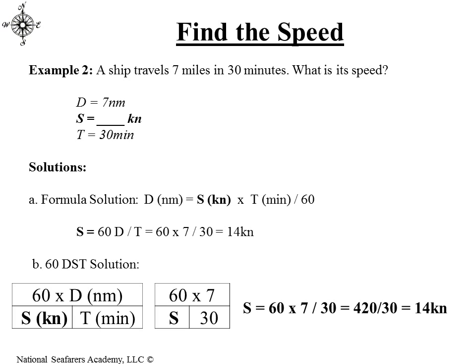The second type of problem: finding the speed. A ship travels 7 miles in 30 minutes — what is the speed? We're given distance of 7 nautical miles and time of 30 minutes. Using the formula: speed equals 60 times distance divided by time, so 60 times 7 divided by 30 equals 14 knots. Using the table solution: speed equals 60 times 7 divided by 30, which is 420 divided by 30, or 14 knots.